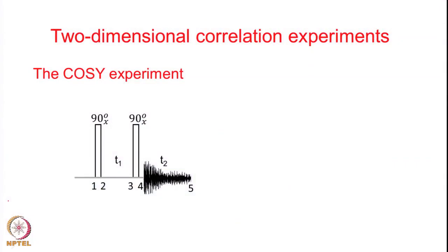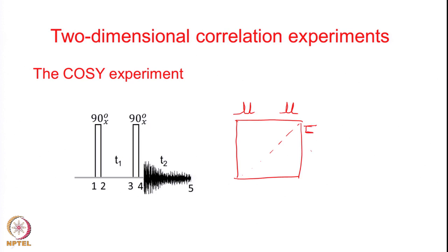The pulse sequence is given here - it is a 2-pulse experiment and it generates a 2-dimensional spectrum of this type. We have the so-called diagonal here, and if I have a 2-spin system, I have 1-dimensional peaks - two doublets for a 2-spin system. Similarly, I will have 2 peaks here and 2 peaks here. This is the 1-dimensional spectrum and in the 2D spectrum, this will produce peaks like this. These are the so-called diagonal peaks and they will have a fine structure which displays the coupling between the 2 protons. We also said that we have this sort of a display of signs in the diagonal as well as in the cross peak.